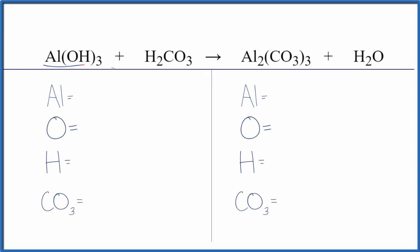In this video, we're going to balance Al(OH)3 plus H2CO3. This is aluminum hydroxide. This is carbonic acid.